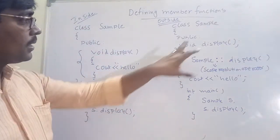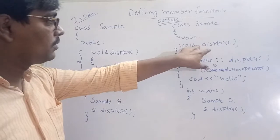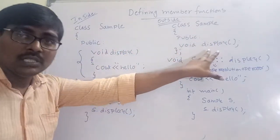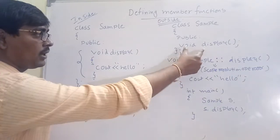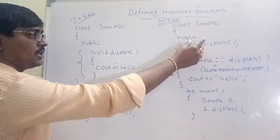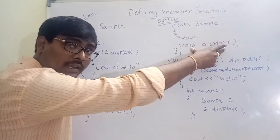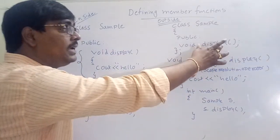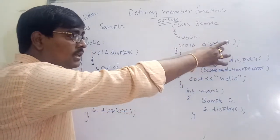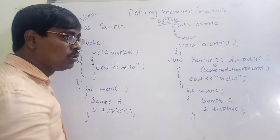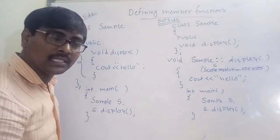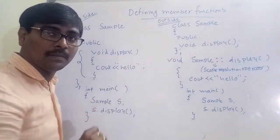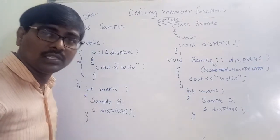Observe carefully. Outside the class means the complete procedure is the same — instead of writing the definition inside, I am writing only the declaration inside. Why are we using the class name? Suppose in C++, a program contains any number of classes — there is no restriction. For example, I have two classes: Sample1 and Sample2.